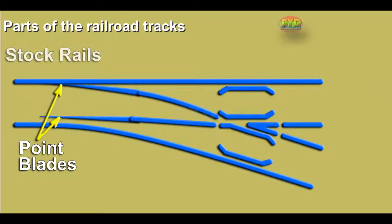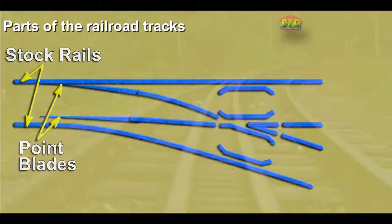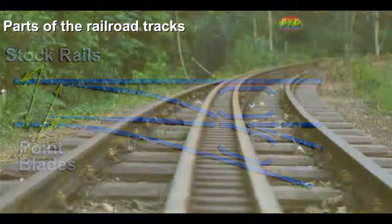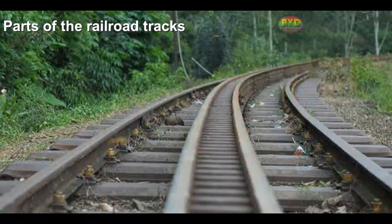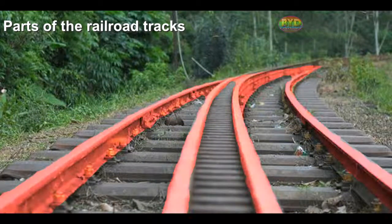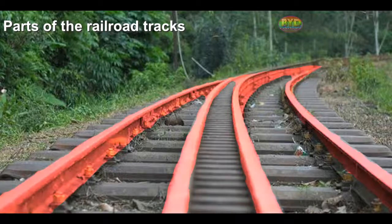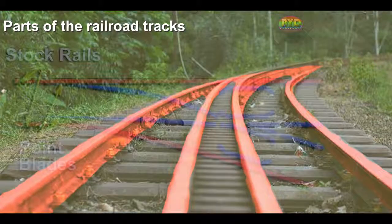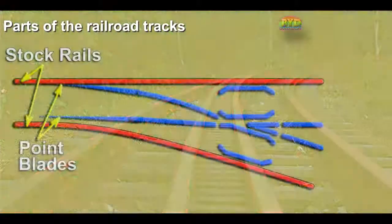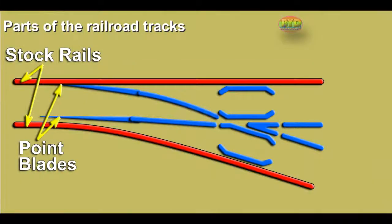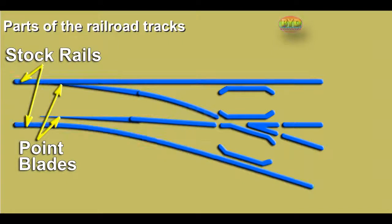Stock rails are the running rails immediately alongside the switch rails, against which the switch rails lay when in the closed position. The stock rails are otherwise ordinary rails that are machined, drilled, and bent as required to suit the design of the turnout switch and the individual switch point rails.